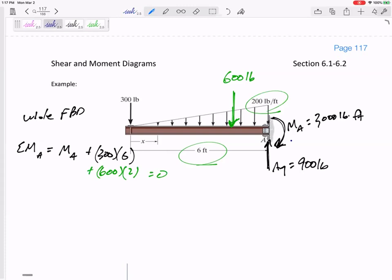What I actually did was first I guessed counterclockwise. I like to guess counterclockwise first. And then I got MA negative 3000, so it showed me that it was not counterclockwise. It was clockwise 3000. And summing the forces in the Y direction, 300, 600, Ay equals 900.